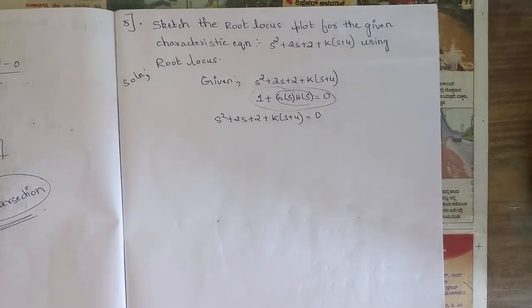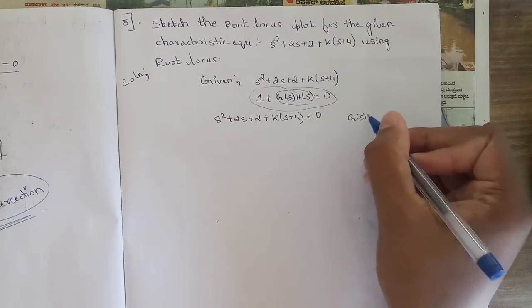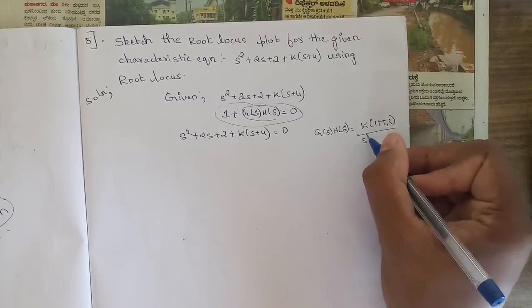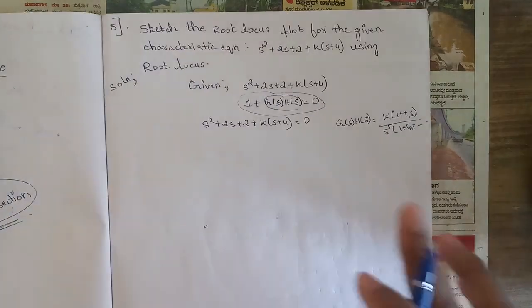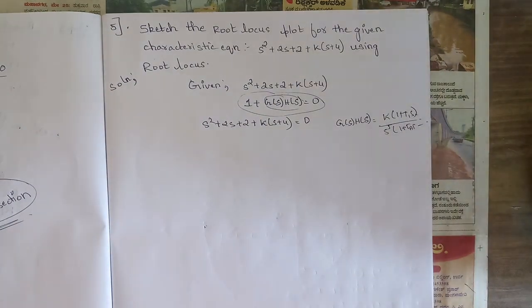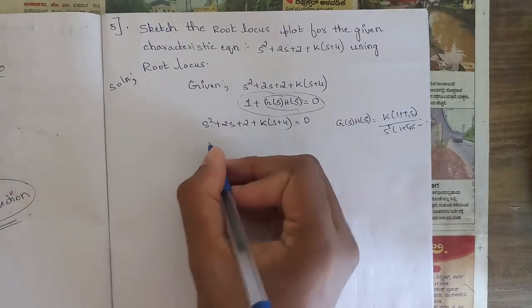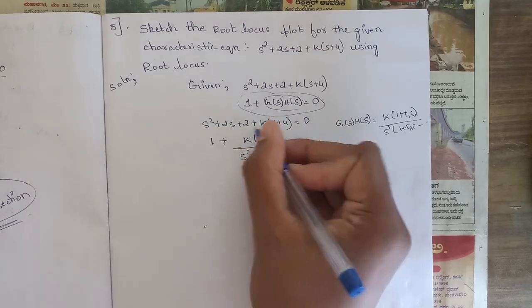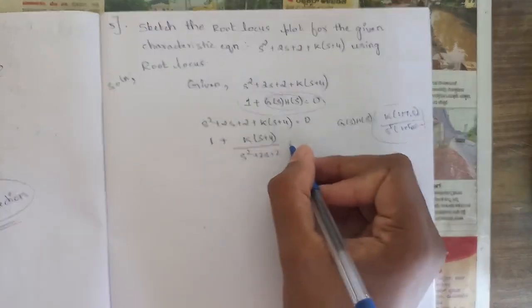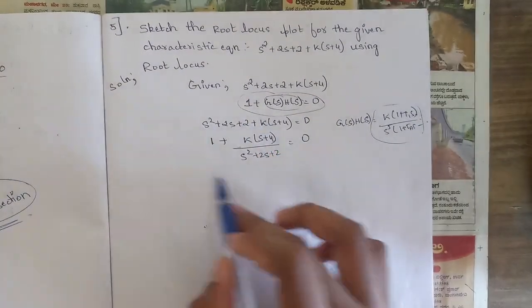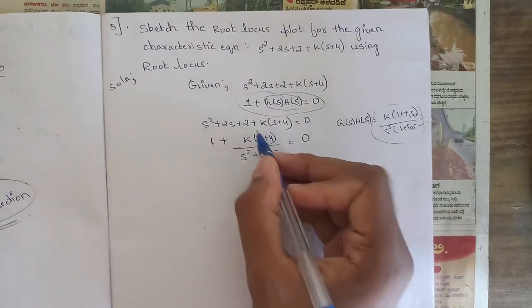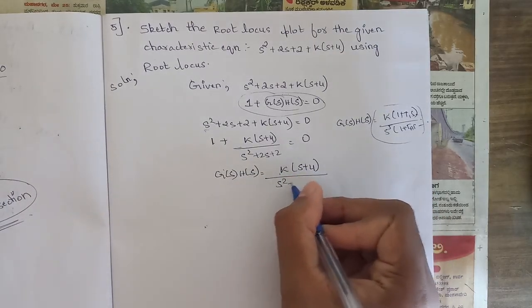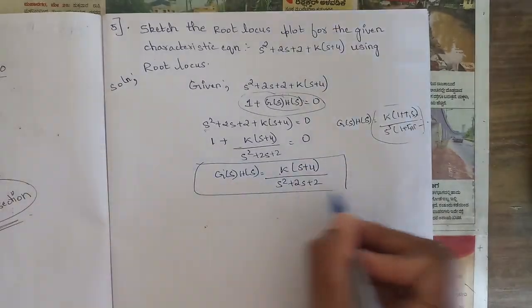Observing this equation carefully, the general form of G(s)H(s) is K times (1 + T1·s) divided by s^j times (1 + T·s) and so on. We can rewrite the equation as 1 + K(s + 4) / (s² + 2s + 2) = 0. Therefore, our transfer function G(s)H(s) = K(s + 4) / (s² + 2s + 2).